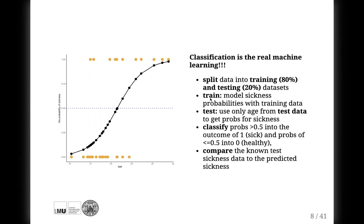In the second step, we train our model. It sounds really fancy, but it's actually not. All we do here is use our training dataset with 80% of our data and fit the usual logistic regression. In the next step, which is called test the model, we use only the age from the test data to get probabilities for sickness. So we ask this trained model, without showing it the sickness labels we already know, what it thinks about our new data. Then by applying the threshold, we classify our probabilities into zeros and ones.